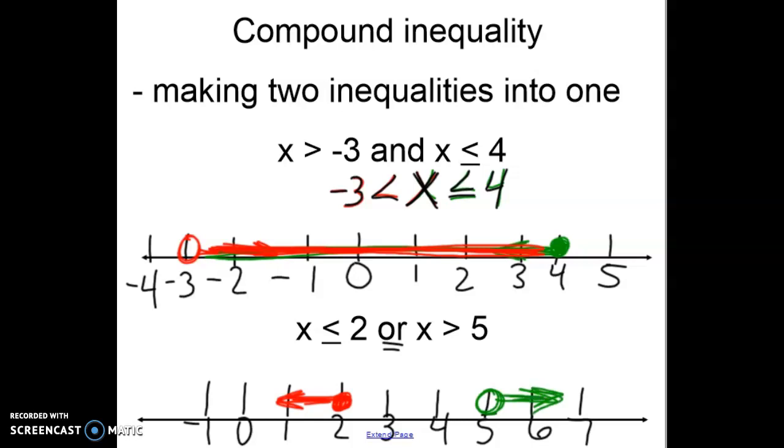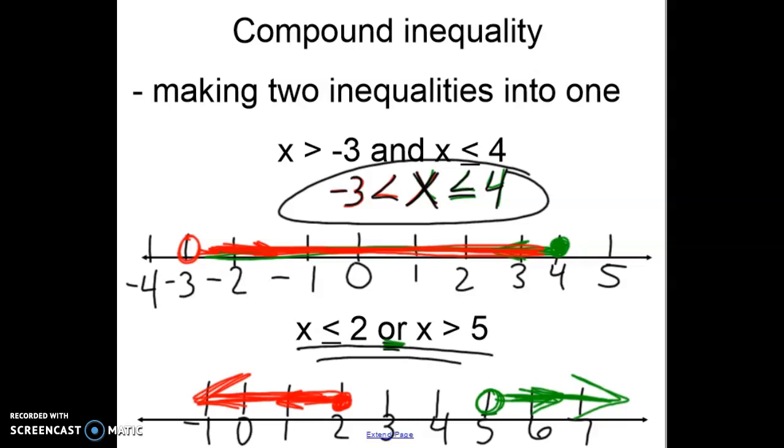And this would be okay because of the word or. Or allows this to be true or the other to be true. So I can shade it this way or I can shade it the other way. Now a compound inequality for this doesn't really make sense because the answers aren't between two and five. They're on the outside of two and five. So writing what we just did doesn't really make a lot of sense for this. It would be better just to leave it as this inequality with the word or in between.